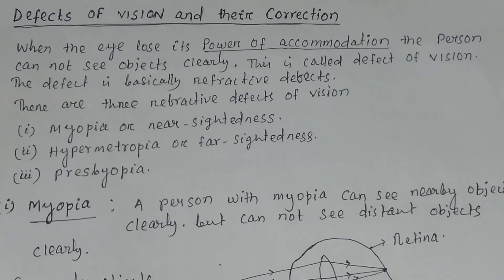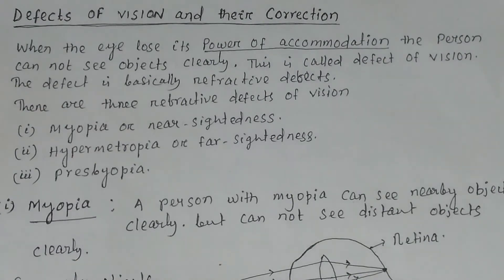There are three refractive defects of vision. Number one: myopia or nearsightedness. Number two: hypermetropia or farsightedness. And number three: presbyopia.